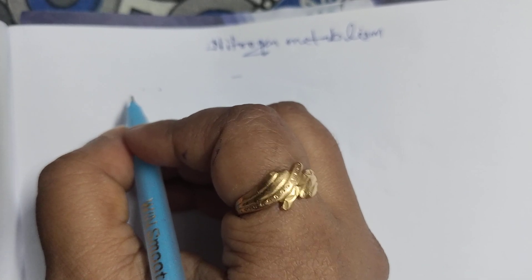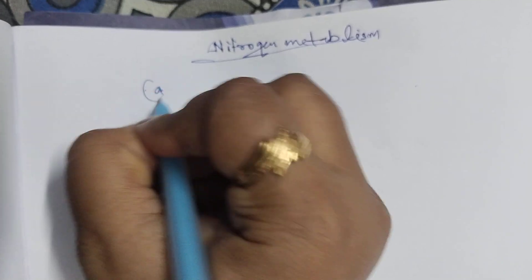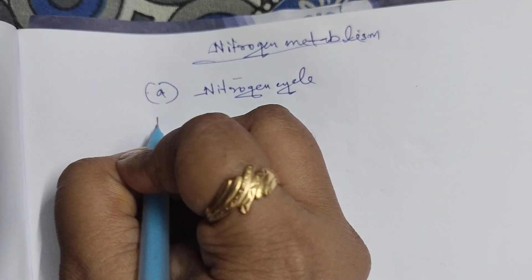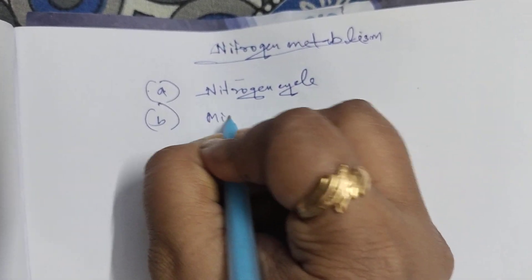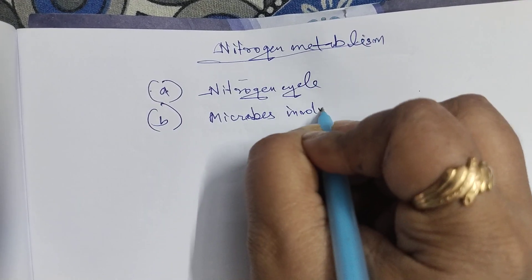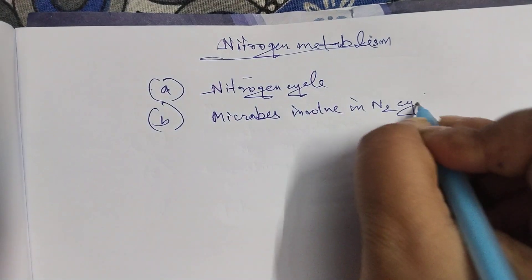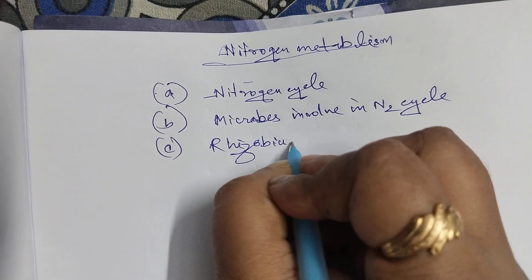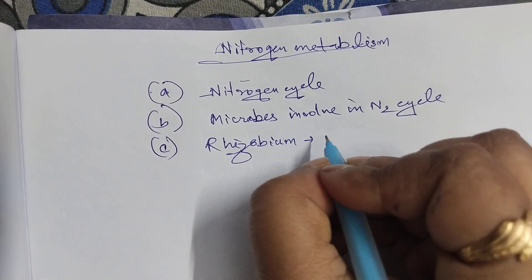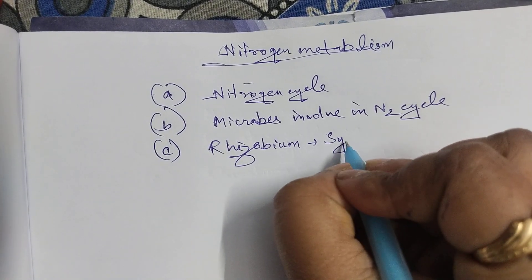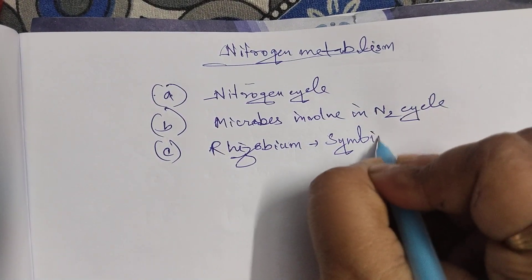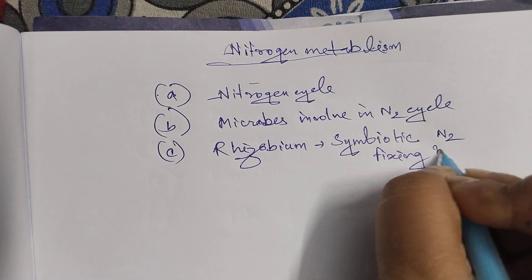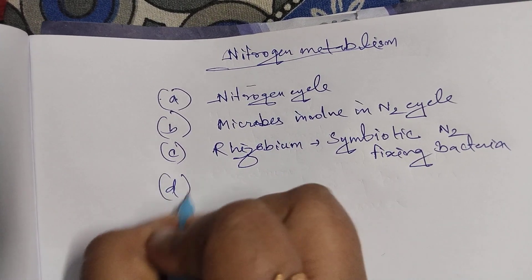This topic consists of various subtopics: first is the nitrogen cycle, second is microbes involved in the nitrogen cycle, third is Rhizobium — the symbiotic nitrogen-fixing bacteria — we need to know about Rhizobium and how it fixes atmospheric nitrogen, and fourth is the fate of ammonia.